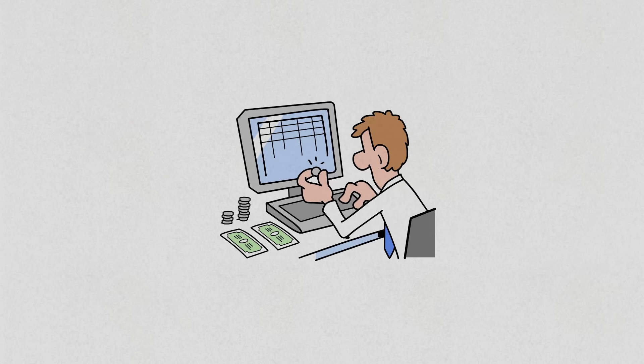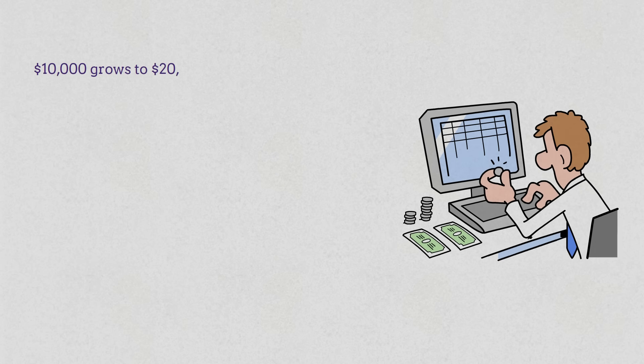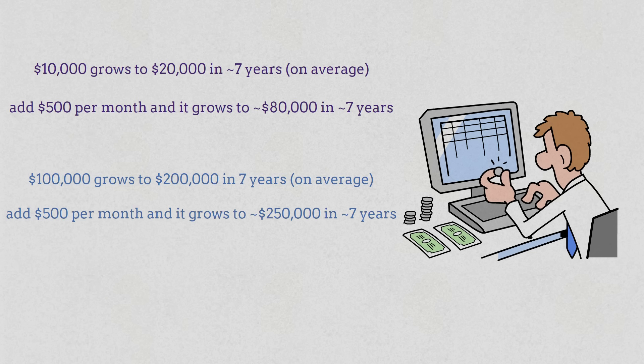For people who are working and consistently adding to their investments, the growth can get really exciting. Because you're not just relying on the initial sum, you're stacking on new money every month. Take $10,000 and the S&P 500. On its own, it might double in about 7 years, right? But add $500 a month, roughly 10% of the median annual income, and suddenly that $10,000 rockets to over $80,000 in the same time. Start with $100,000 and keep adding $500 a month? Over $250,000 in just 7 years. That's the magic of compounding, plus steady contributions.